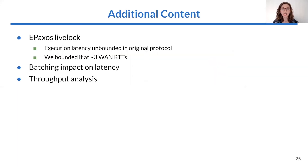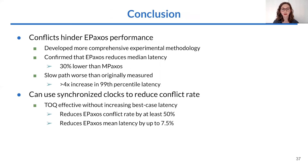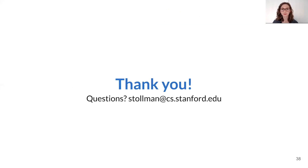Other topics covered in the paper include that EPaxos originally suffered from the potential for unbounded execution delays or even livelock, and we came up with a solution that bounds execution delay to about 3 WAN RTTs. To recap, our reevaluation of EPaxos found that the original did not trigger or measure worst-case conflict behavior. With our modified experimental methodology, we confirmed that EPaxos reduces median latency, but we measured worse tail latency than previously reported. Finally, we demonstrated how to use synchronized clocks to reduce conflict rate, and TALK may be generalizable to other fast path protocols as well.